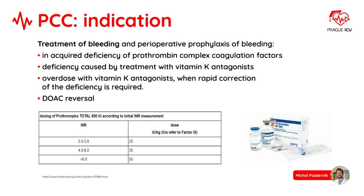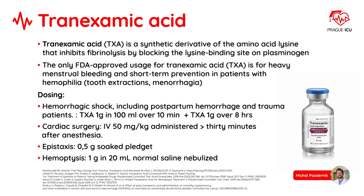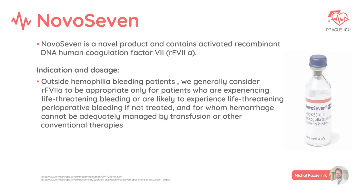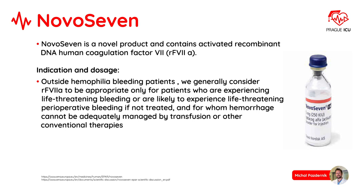Tranexamic acid is a synthetic derivative of the amino acid lysine that inhibits fibrinolysis by blocking the lysine binding site on plasminogen. The only FDA-approved usage for tranexamic acid is for heavy menstrual bleeding and short-term prevention in patients with hemophilia. NovoSeven is a novel product containing activated recombinant DNA human coagulation factor VII, with its indication mainly in patients with hemophilia.